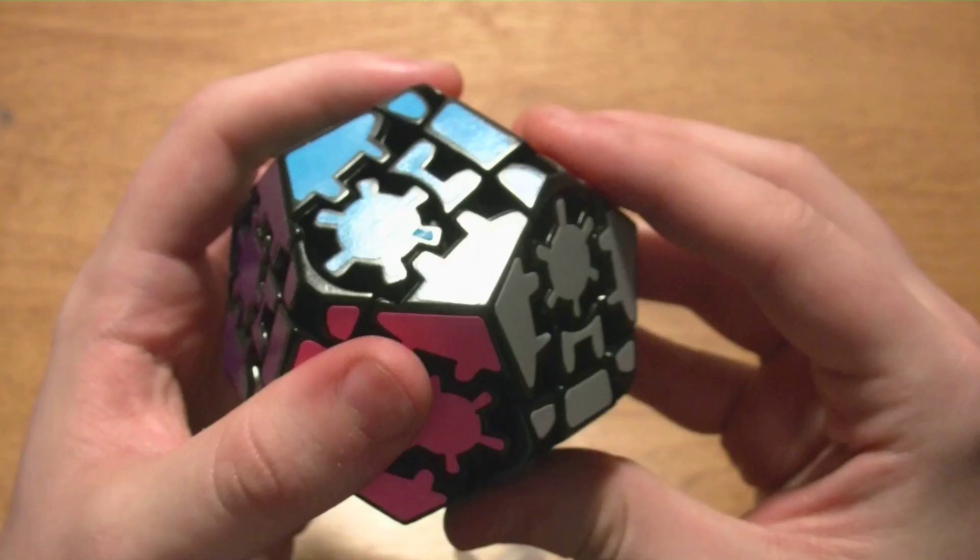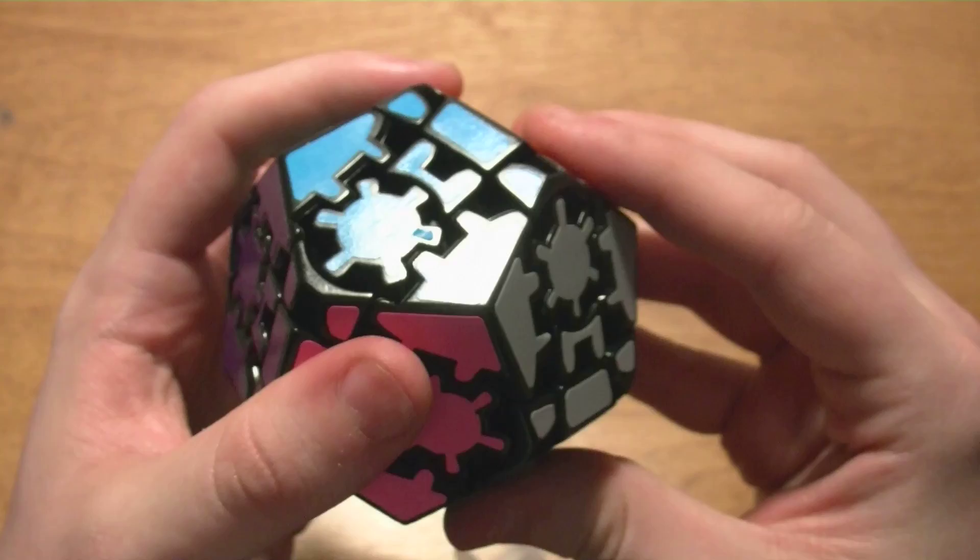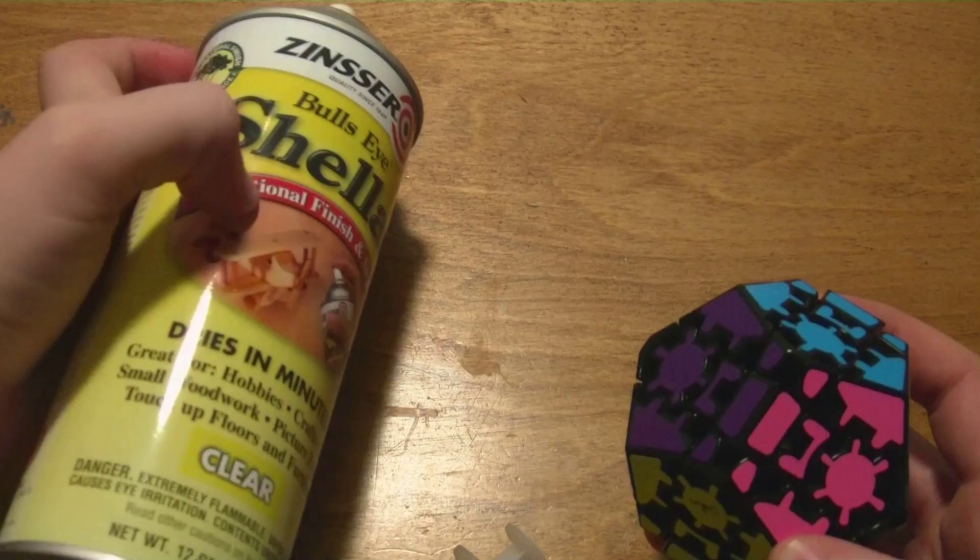So the problem with this kind of puzzle is that the ends can kind of peel off sometimes. And yeah, you can kind of see it happening there. So I'm probably going to take my shellac coating stuff and spray it on that. I have a whole video dedicated to that too. So that might be worth it.